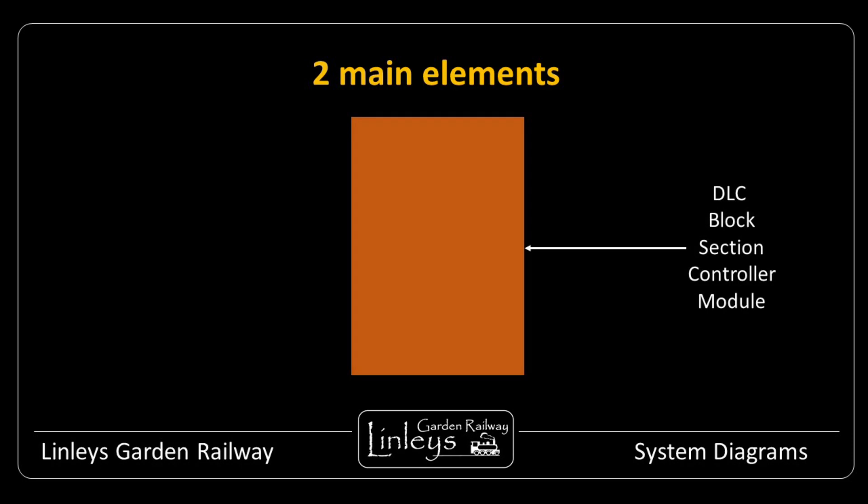The block section controller then has two main elements: the circuit board and the track power regulator.